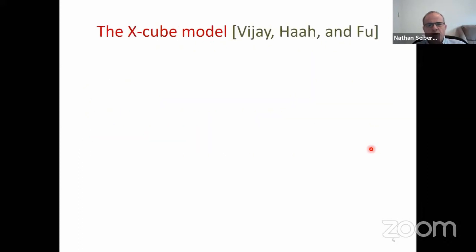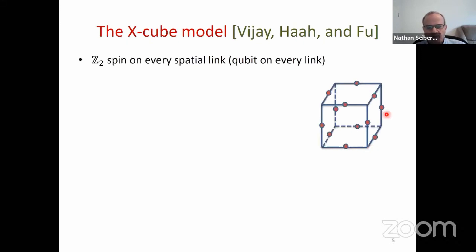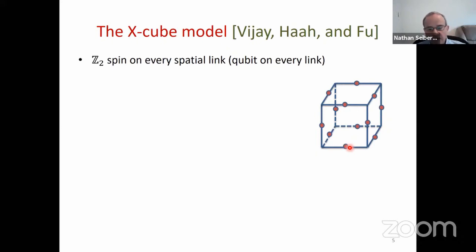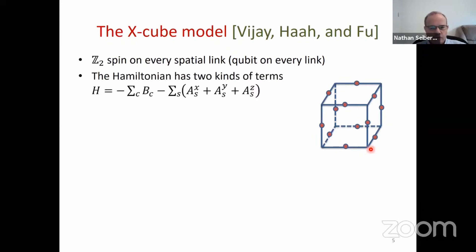I'd like to discuss the model by Vijay, Haah and Fu, known as the X-cube model. This is a lattice model in 3+1 dimensions: we start from a three-dimensional cubic lattice and put a Z2 spin — a qubit — on every link. We have a finite box with periodic boundary conditions. Then we pick a Hamiltonian. The Hamiltonian is a sum of two kinds of terms: a sum over the cubes of the lattice, and another term which is a sum over the sites of the lattice.